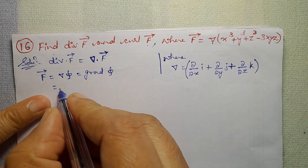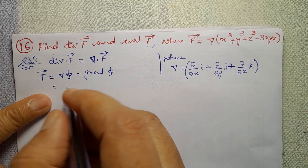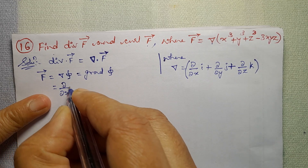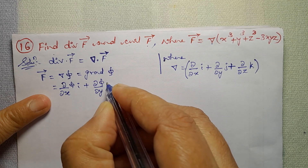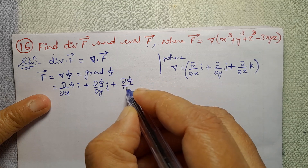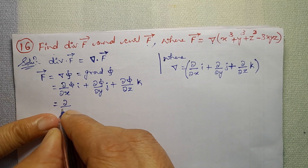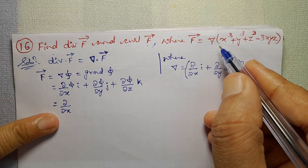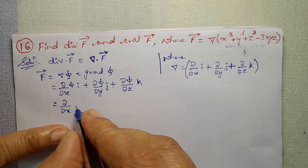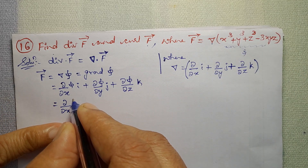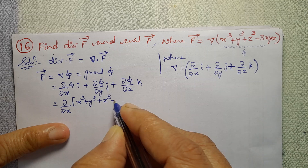This is del, and this is phi. So phi is the first term. Every term is multiplied: d(phi)/dx · i + d(phi)/dy · j + d(phi)/dz · k. Here phi equals x³ + y³ + z³ − 3xyz.